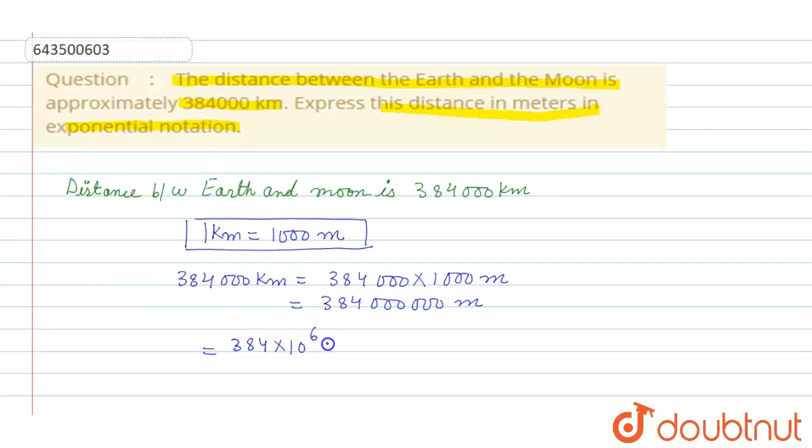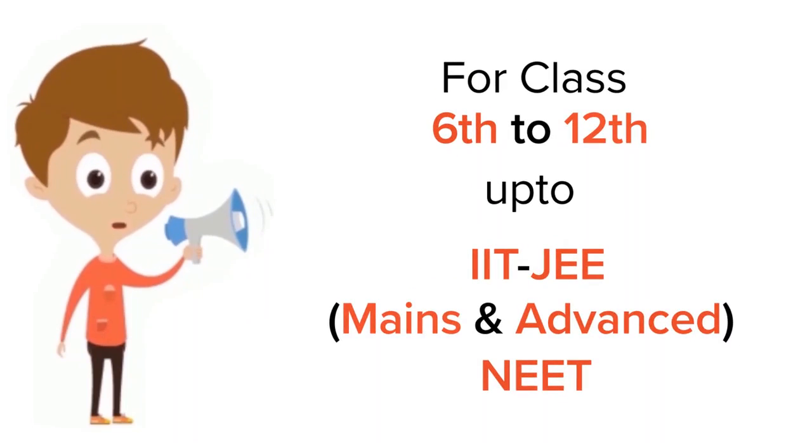So distance in meters between Earth and Moon is 384 into 10 raised to the power 6 meters. Clear.